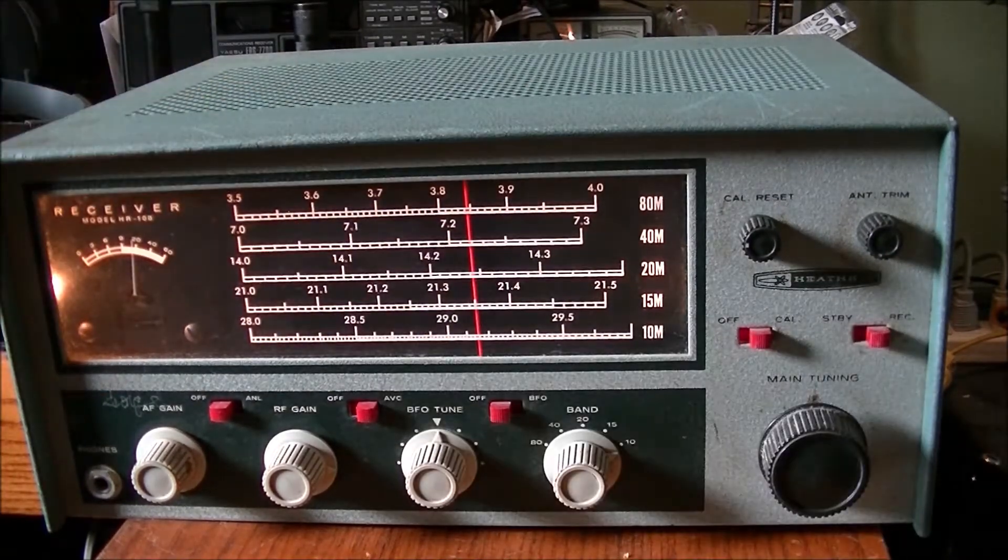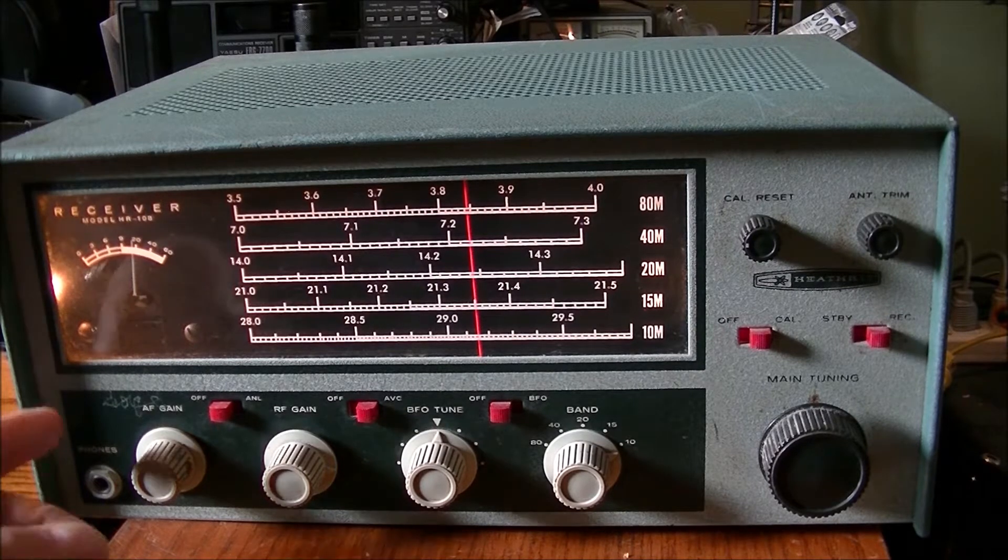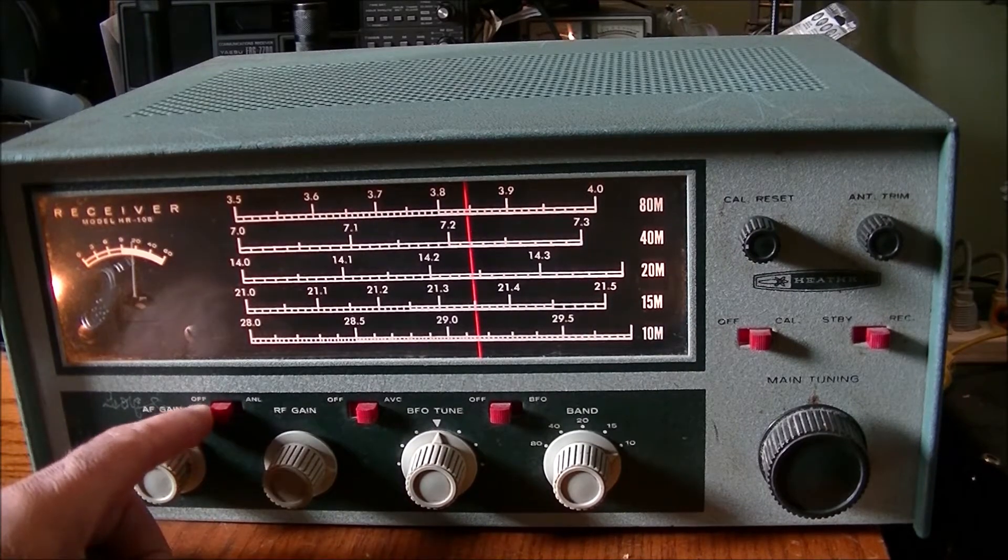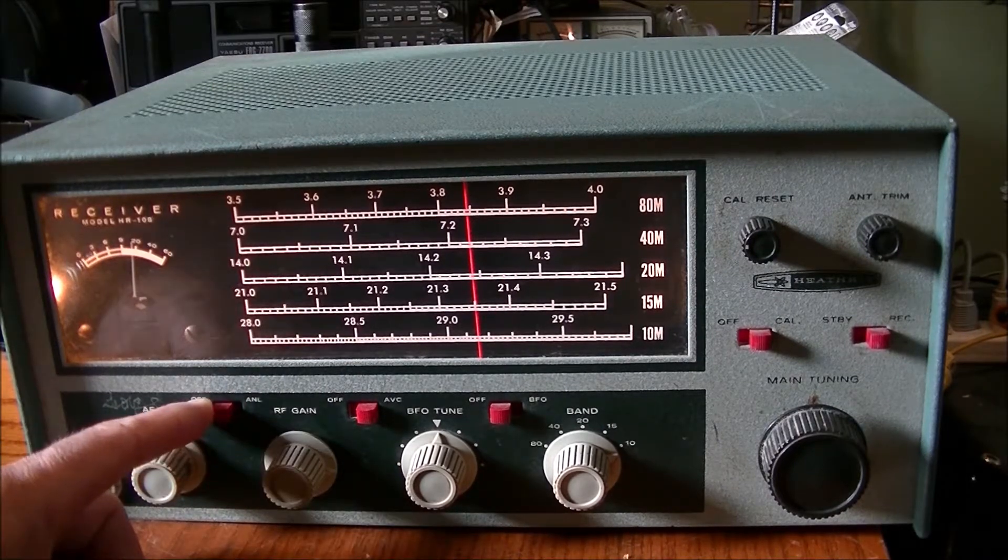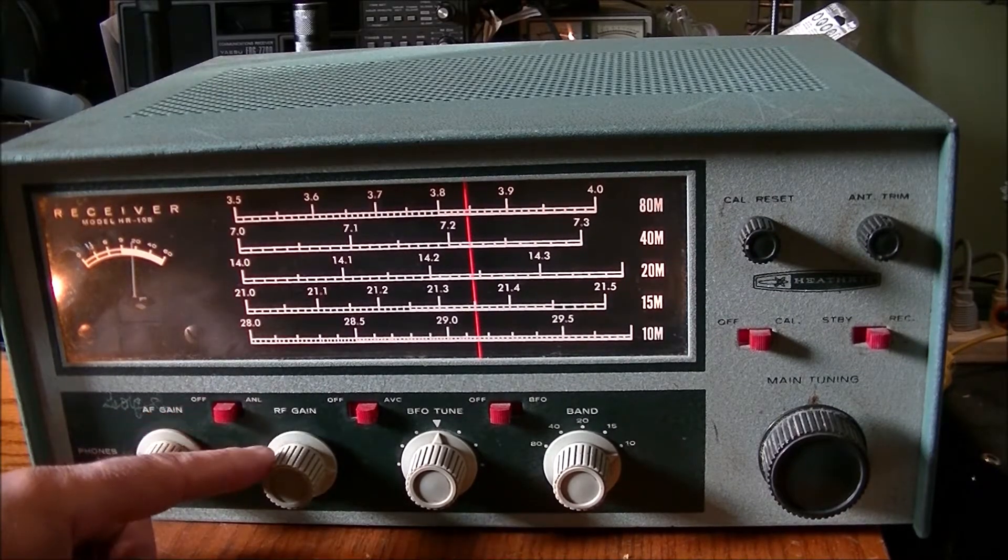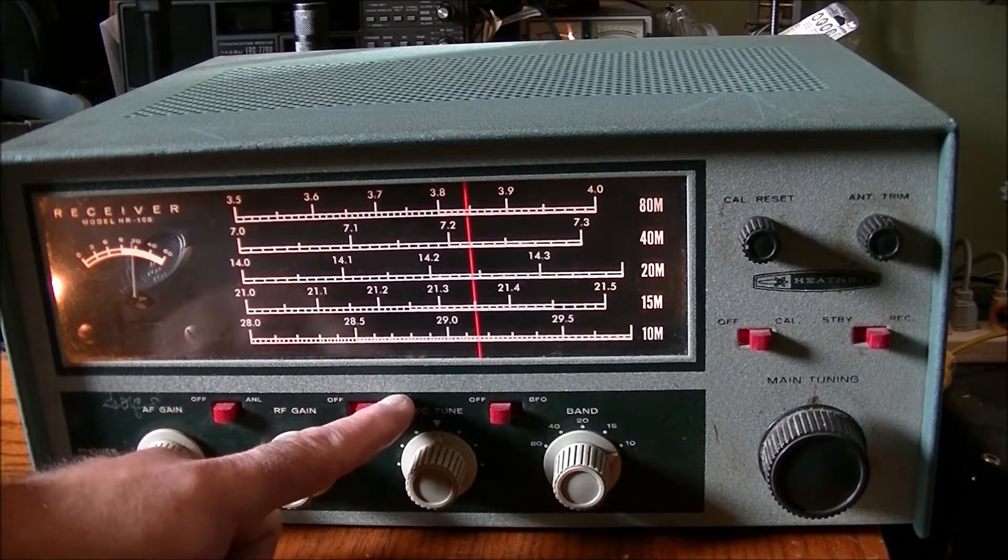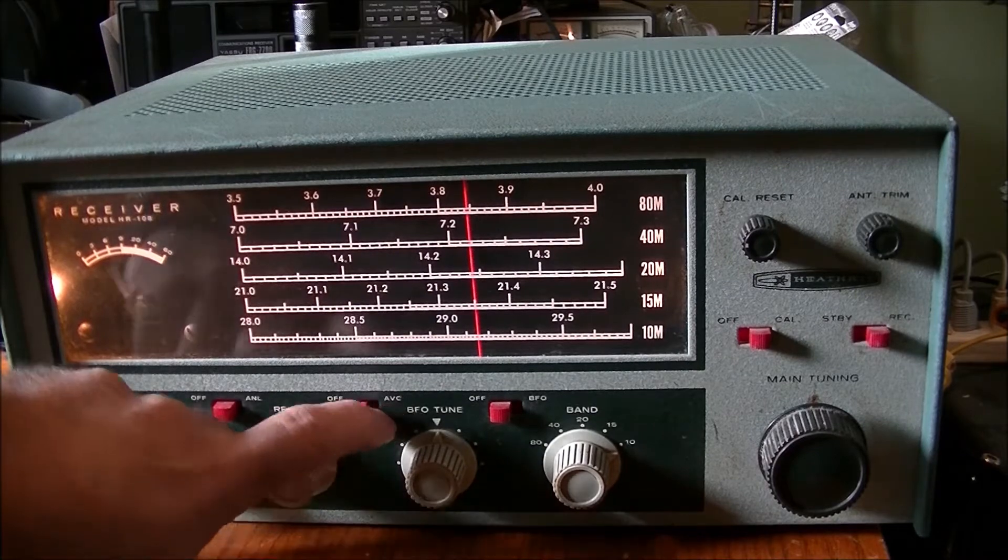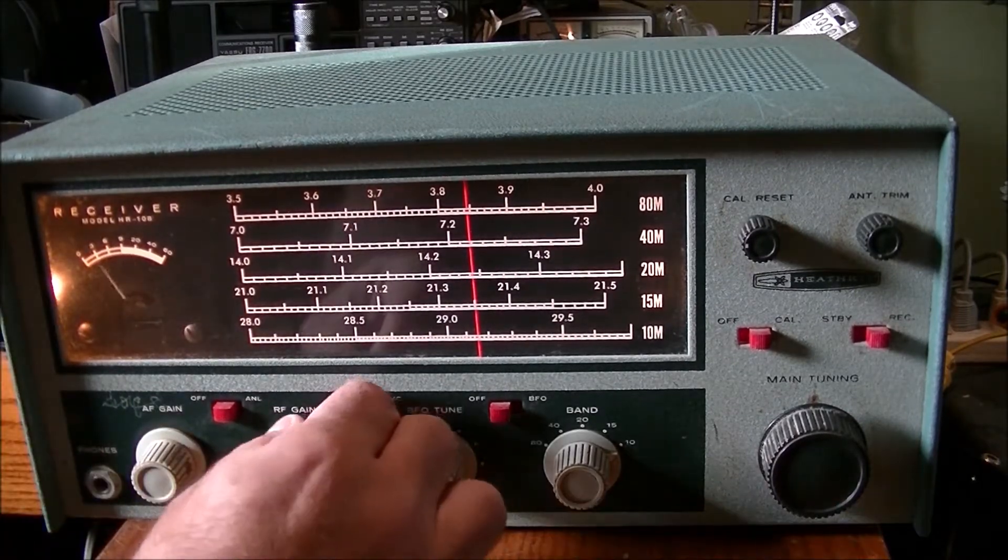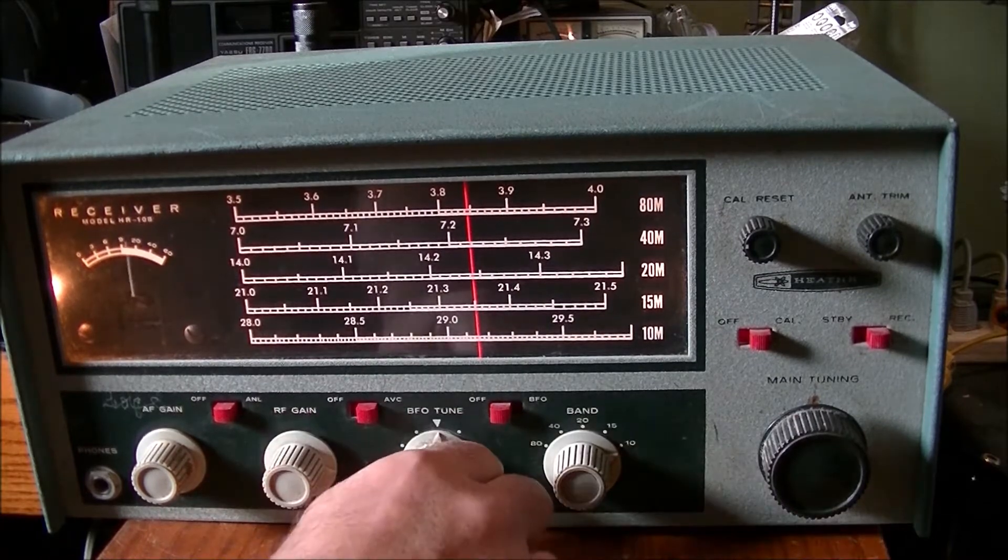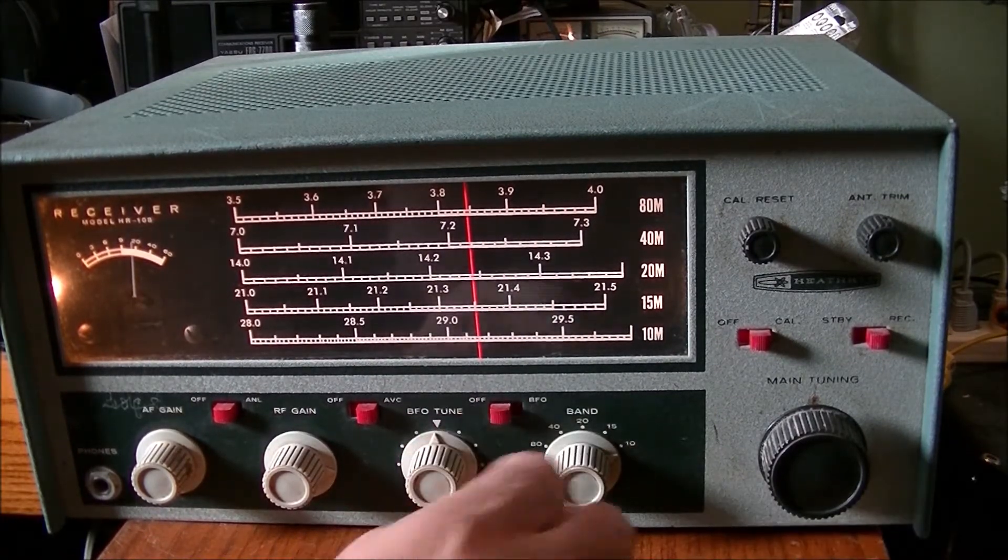This is one of the barter radios that I received. It has RF gain, ANL on and off—sorry, AF gain I should say—on and off and an ANL. RF gain here, and this is an AVG or ABC on and off. This is for this meter I guess, obviously it shuts it off, turns it on.